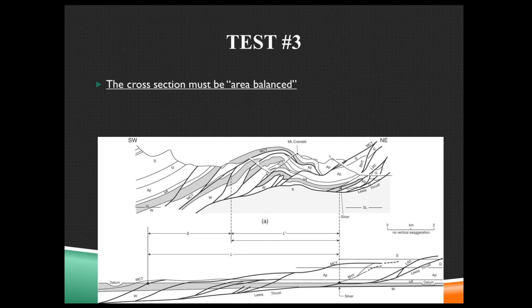Test three, very similar. It must be area balanced. Meaning that as we stretch and straighten this back out, the area, the cross sectional area of what we've drawn has to match. We can't straighten these out and fill in a gap. No, that doesn't work. All of those lines represent rock. We can't destroy rock. We can't create rock. The rock present in the cross section must all exist, no more no less, in the restored cross section. If that can't work, then you know there's a problem with your cross section.